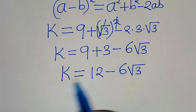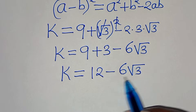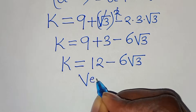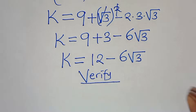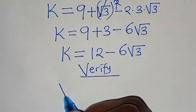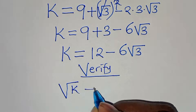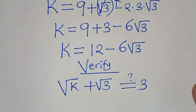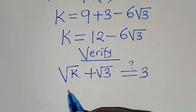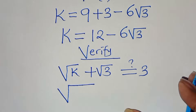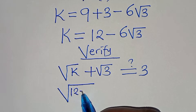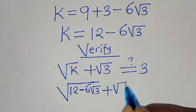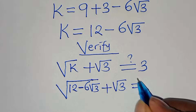This is the value of k. The next step is to verify that this value of k satisfies the equation. Recalling that square root of k plus square root of 3 equals 3, we substitute k to get the square root of (12 minus 6 square root of 3) plus square root of 3, which should give us 3.